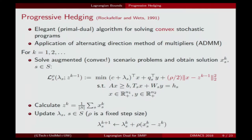In my notation, progressive hedging looks like this: we solve for every one of our scenarios this augmented subproblem, where z^{k-1} is from the previous iteration as the master copy variable. After solving that, the second part of ADMM involves averaging over the solutions from all scenarios. Then we update dual multipliers for every scenario and iterate.